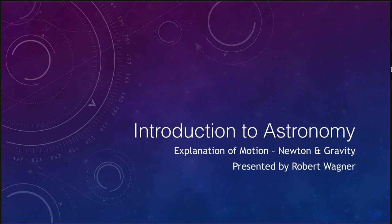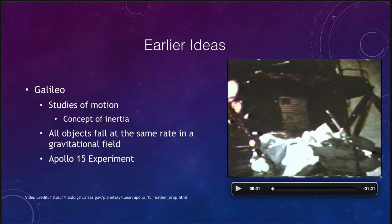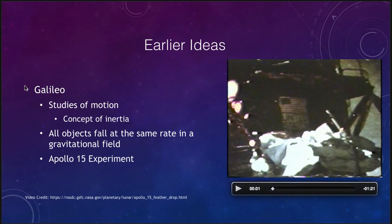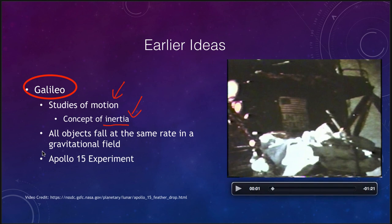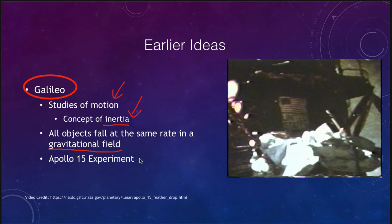Going back to Galileo's time, Galileo gave us some of the ideas of motion. We looked at Galileo before and talked about his telescope, but Galileo also gave us ideas on the study of motion and the concept of inertia — inertia just means that things are reluctant to change their motion. He also found that all objects fall at the same rate in a gravitational field.